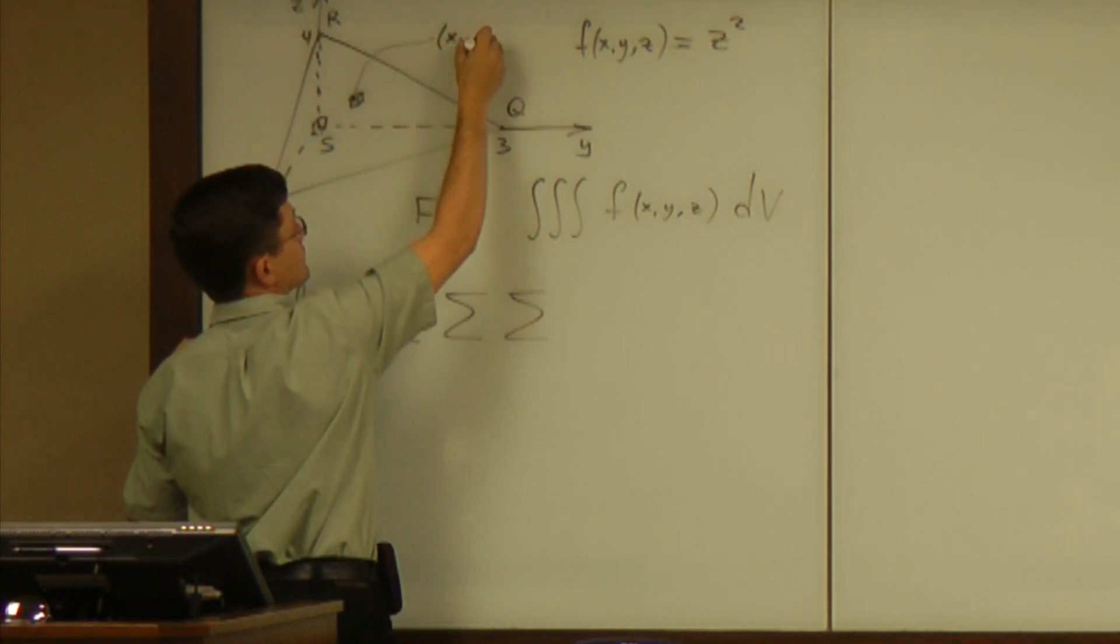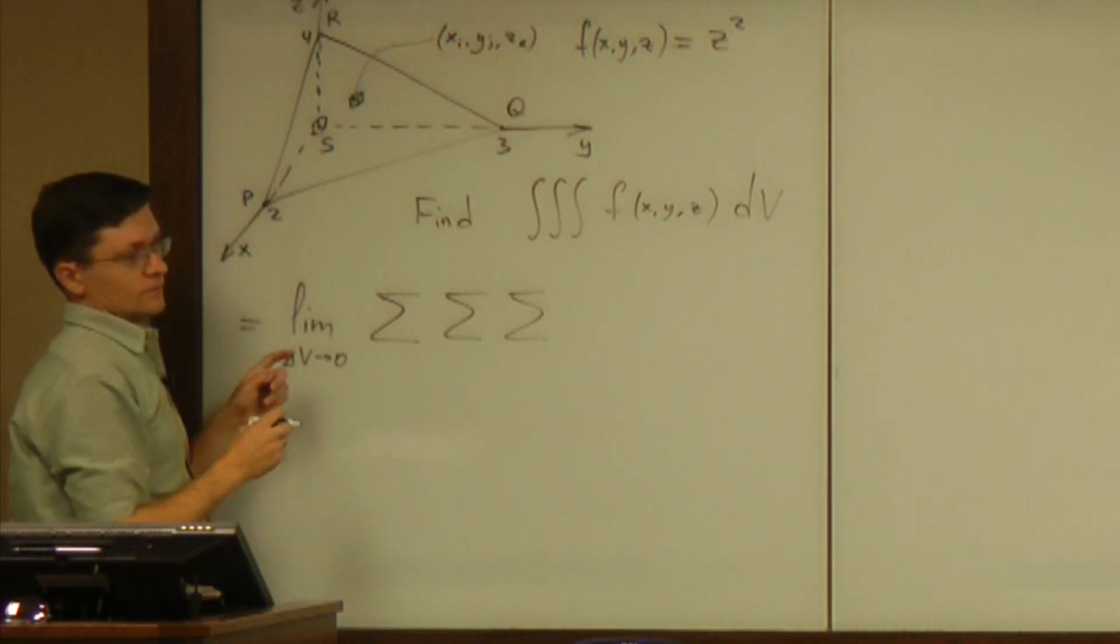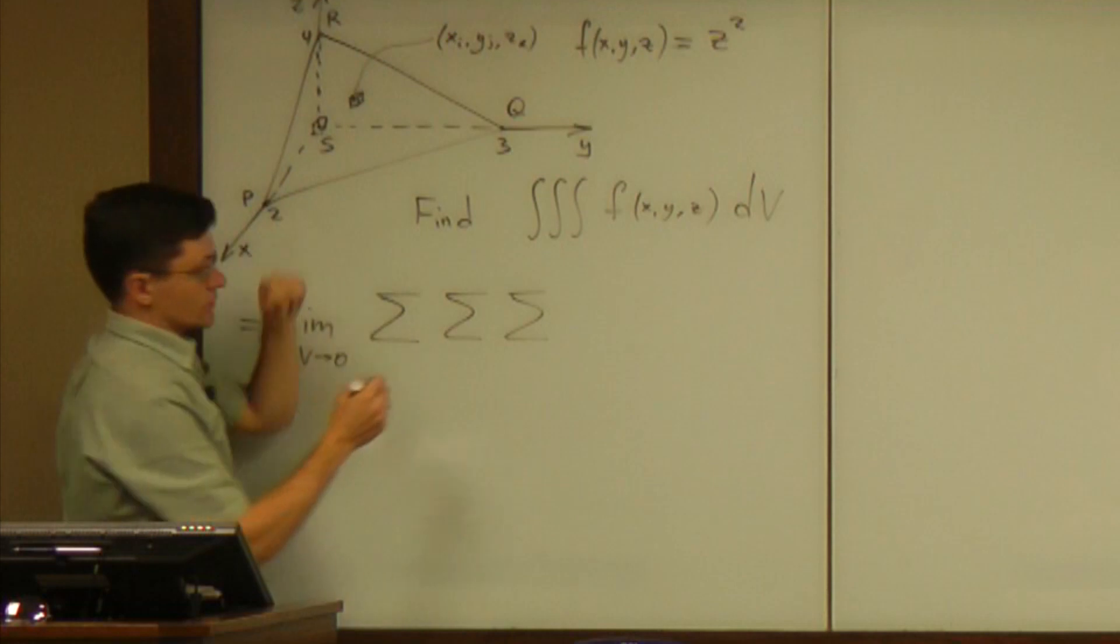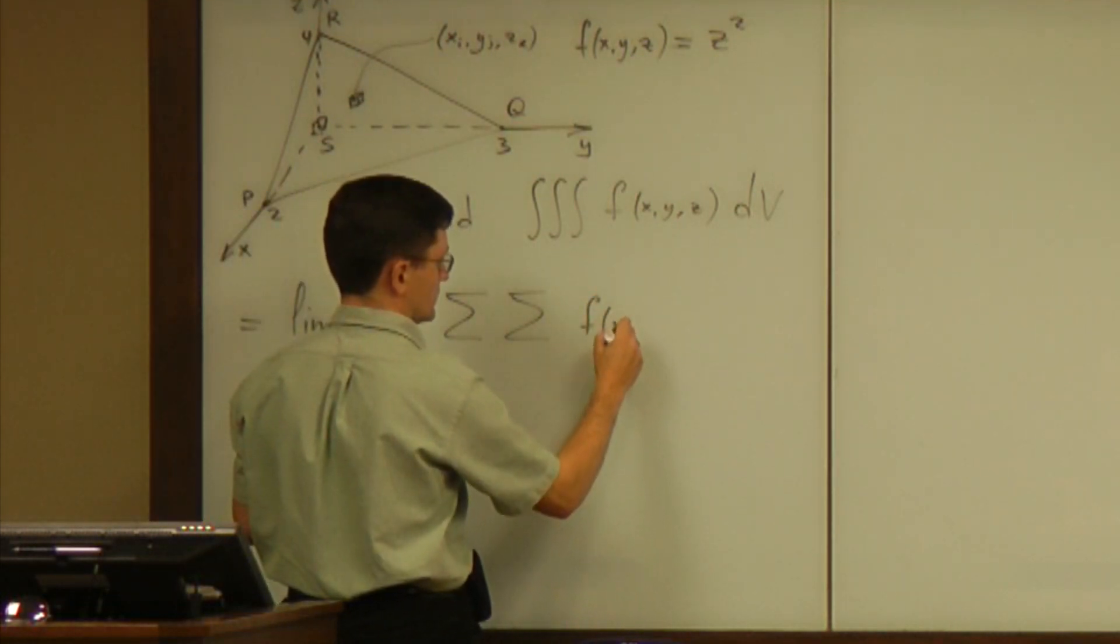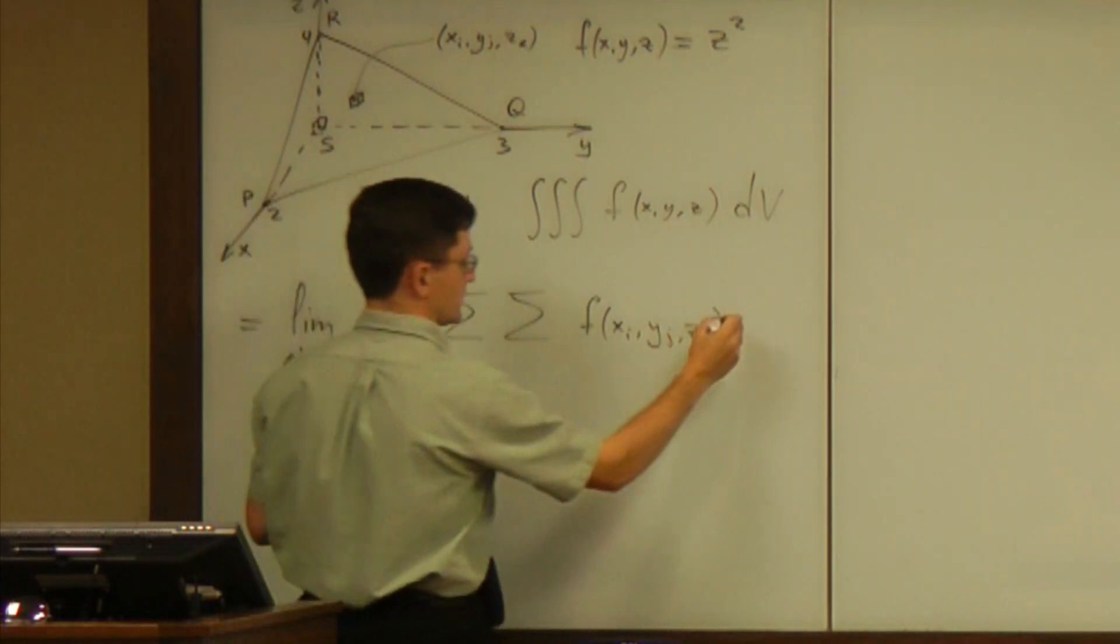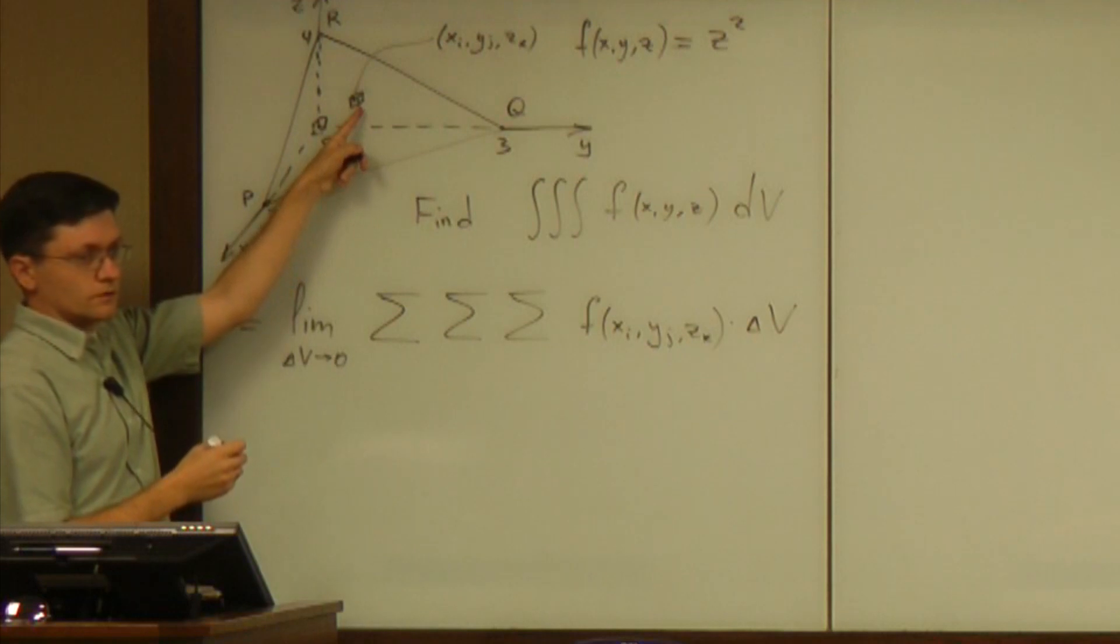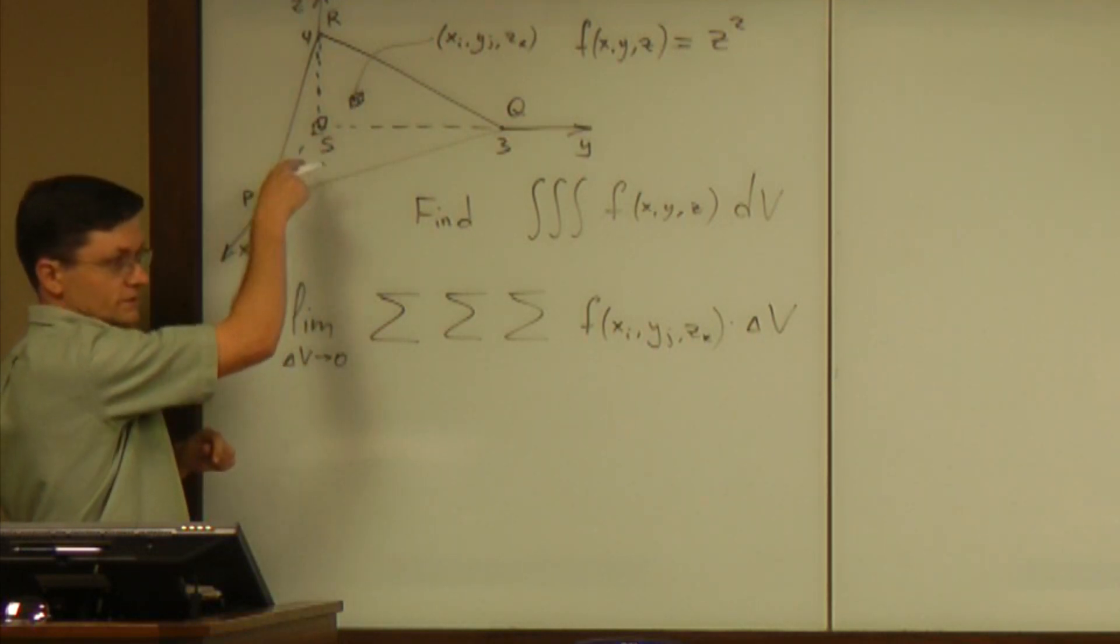Now, we are subdividing the whole pyramid into little boxes, and then for each box we choose a point inside with coordinates Xi, Yj, and Zk. And then we evaluate the function F at that point, multiply it by the volume of that box, little box, and we add over all the boxes inside that pyramid.